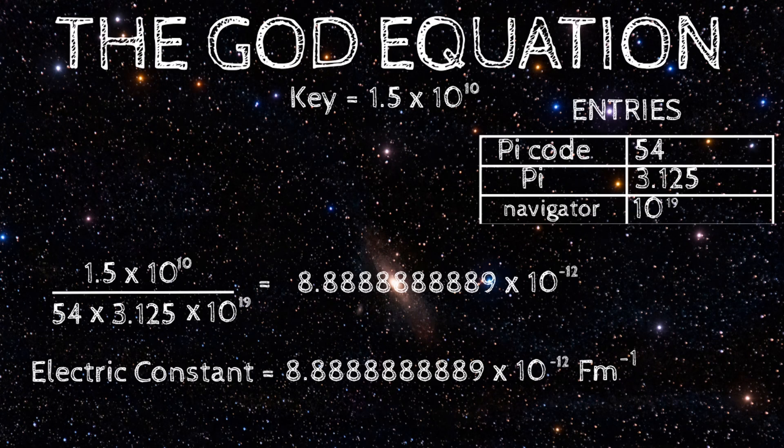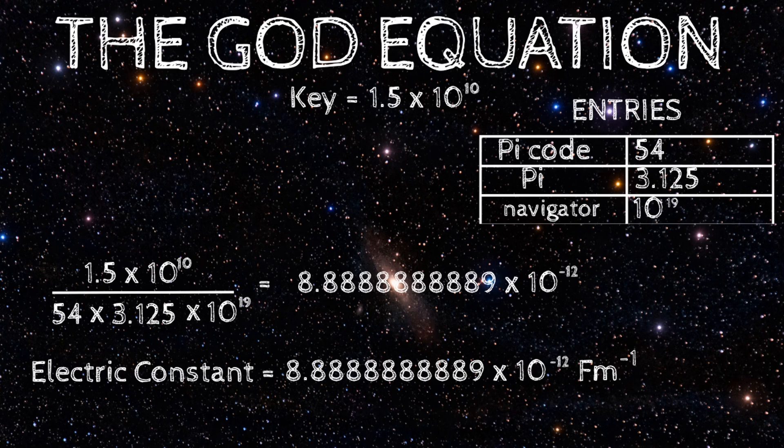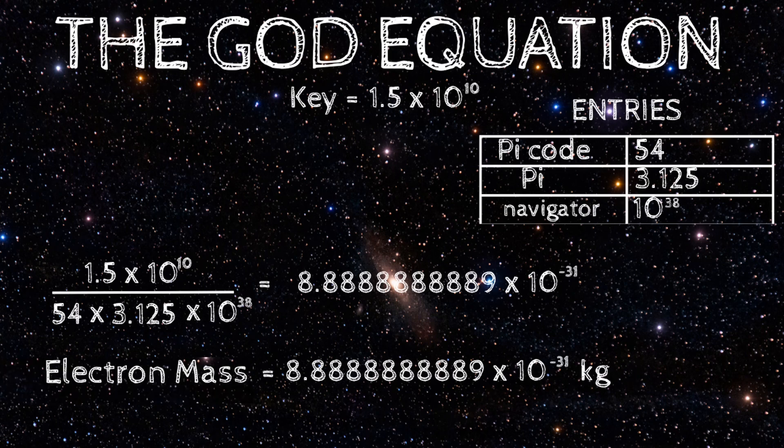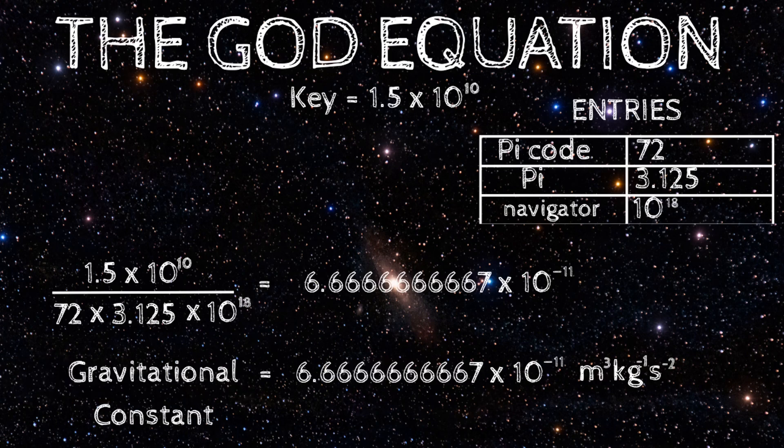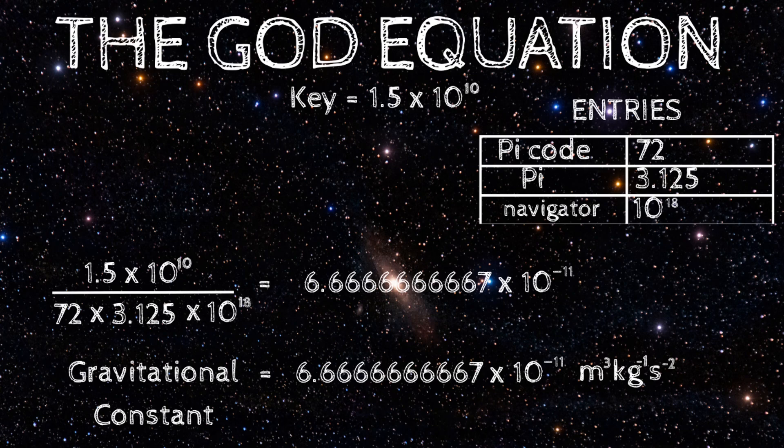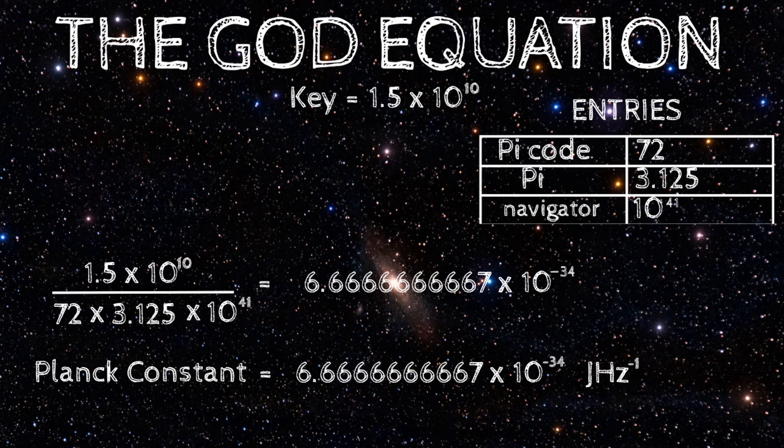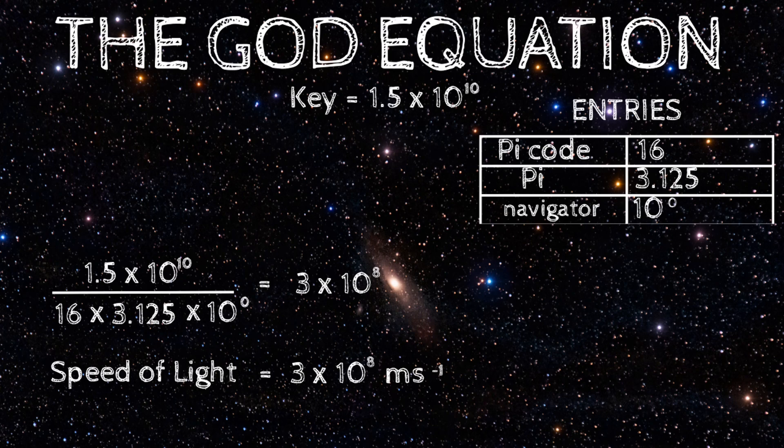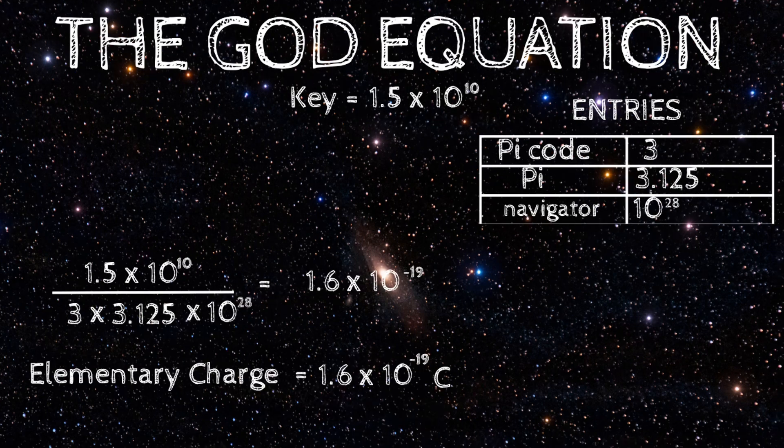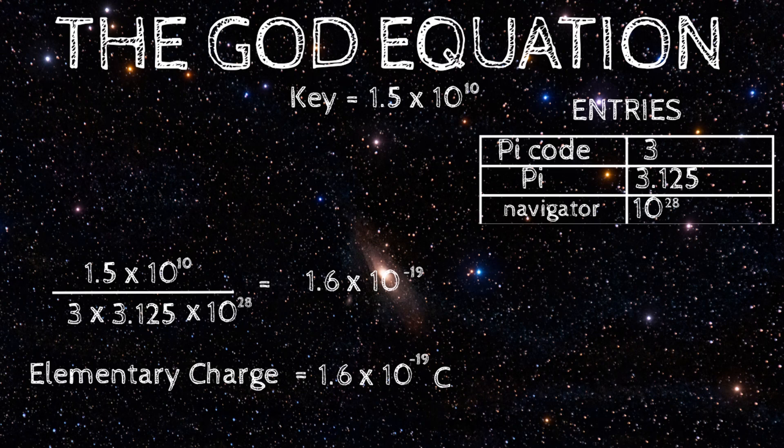If we insert the pi code 54 with a navigator as 10 to the power 19, we get the electric constant. If we insert this same pi code 54 with a navigator of 10 to the power 38, we get the electron mass in kilograms. If we insert the pi code 72 with a navigator of 10 to the power 18, we get the gravitational constant G. This same pi code, with a navigator of 10 to the power 41, produces the Planck constant. A navigator of 10 to the power 23 and 29 gives the reduced Planck constants. If we insert the pi code 16 with a navigator of 10 to the power 0, we get the speed of light. If we insert the pi code 3 with a navigator of 10 to the power 28, we get the elementary charge. And so on, there are lots of physical constants.